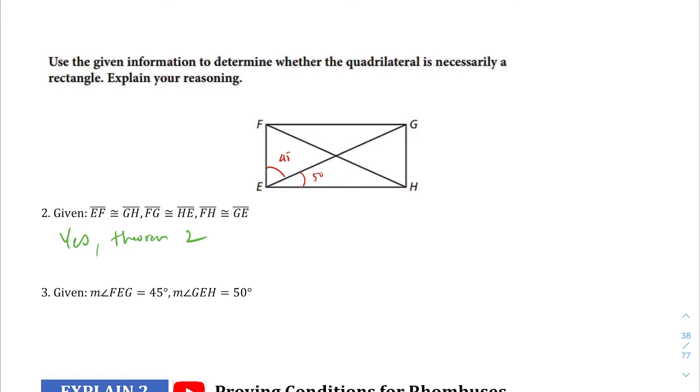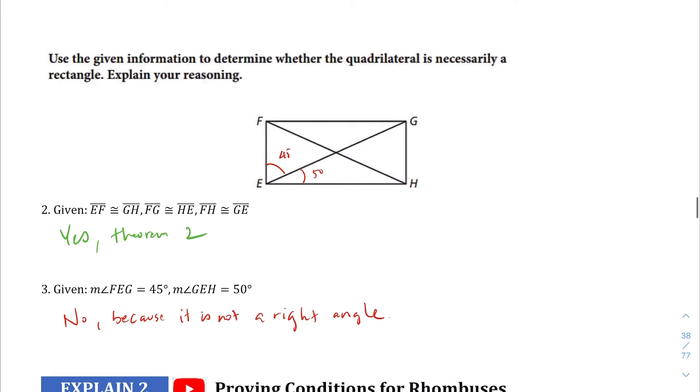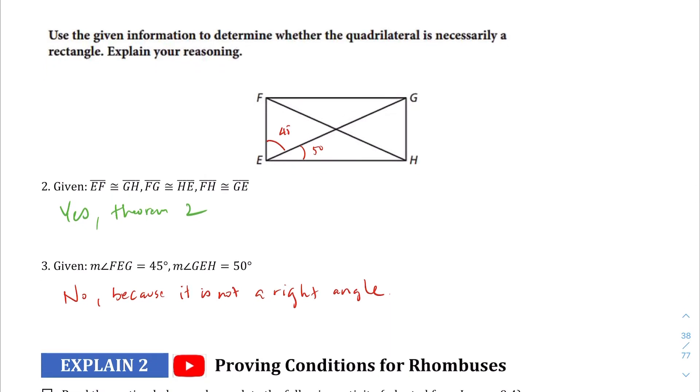We're going to have to say no, because it is not a right angle. It creates a 95 degree angle instead of a 90 degree angle, so it doesn't fulfill theorem one of creating a right angle inside that parallelogram.